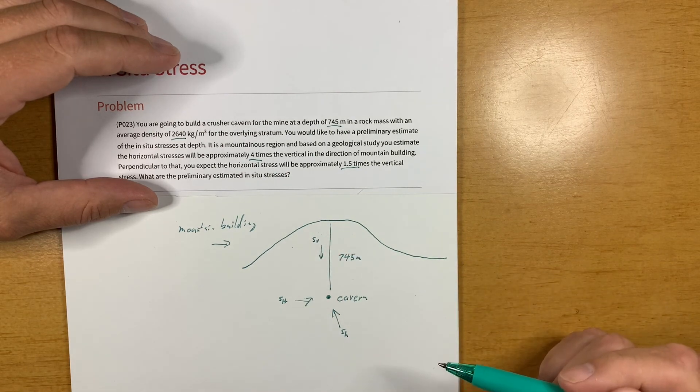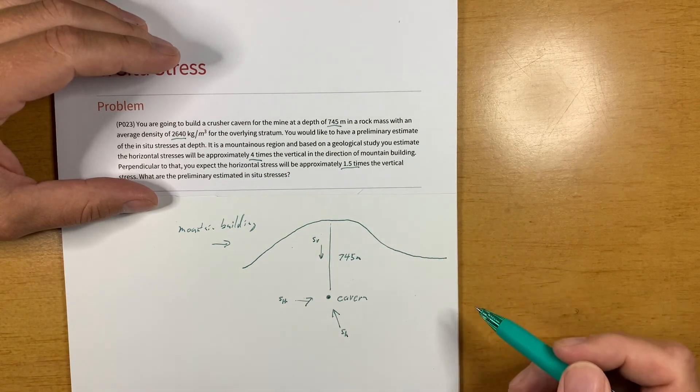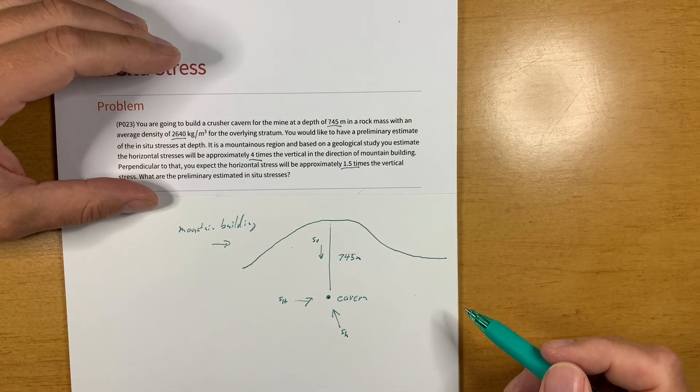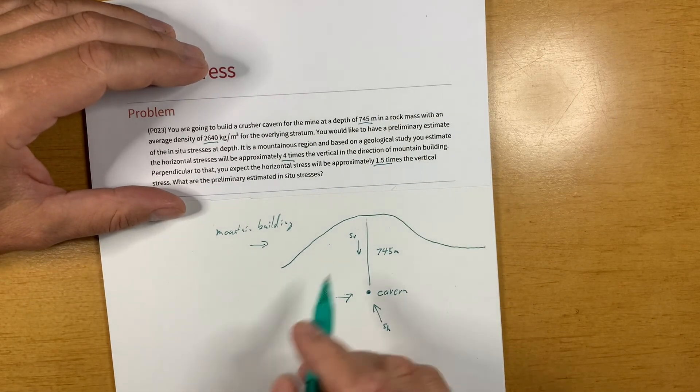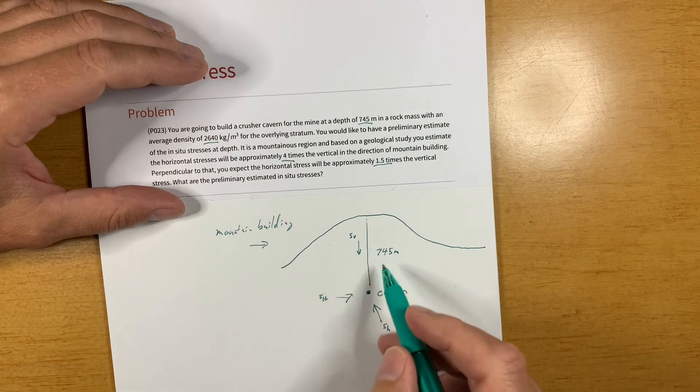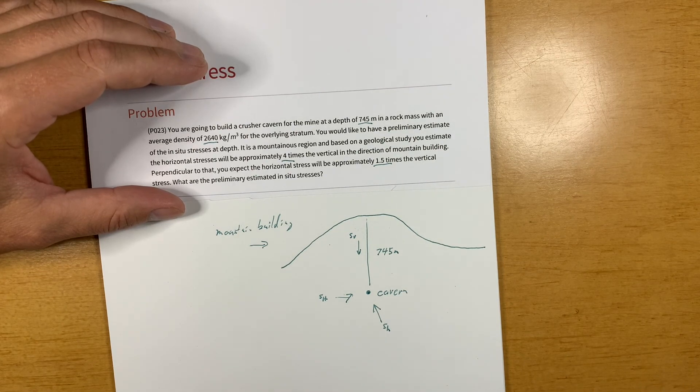All right so we're going to use S_v for vertical, S_H for the maximum horizontal and S_h for the minimum horizontal in situ stresses.